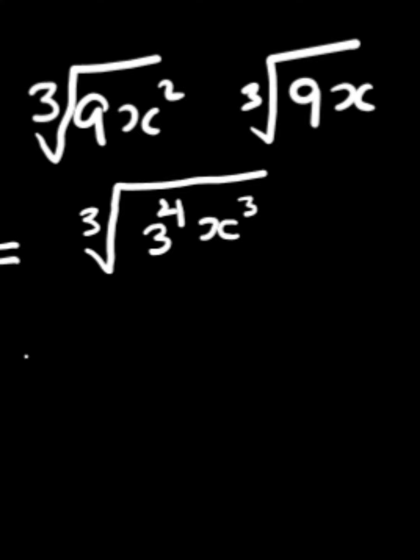Like this, so cube root of 3 to the power 3 is 3, cube root of x power 3 is x. Now inside, 3 is left.